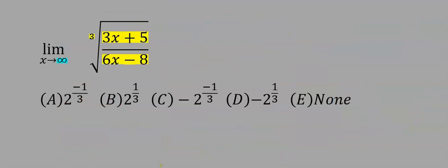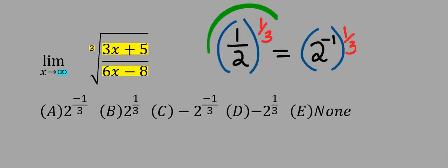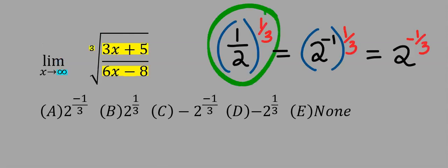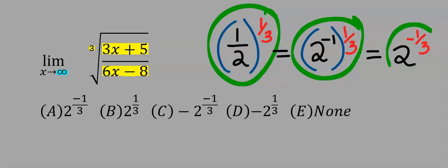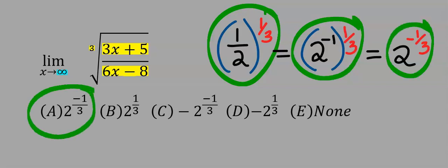We can rearrange this result — both forms are equivalent. We take the 2 up and it acquires a power of minus 1, which is the same expression. The minus will multiply 1 over 3 at the top. The answer is option A.